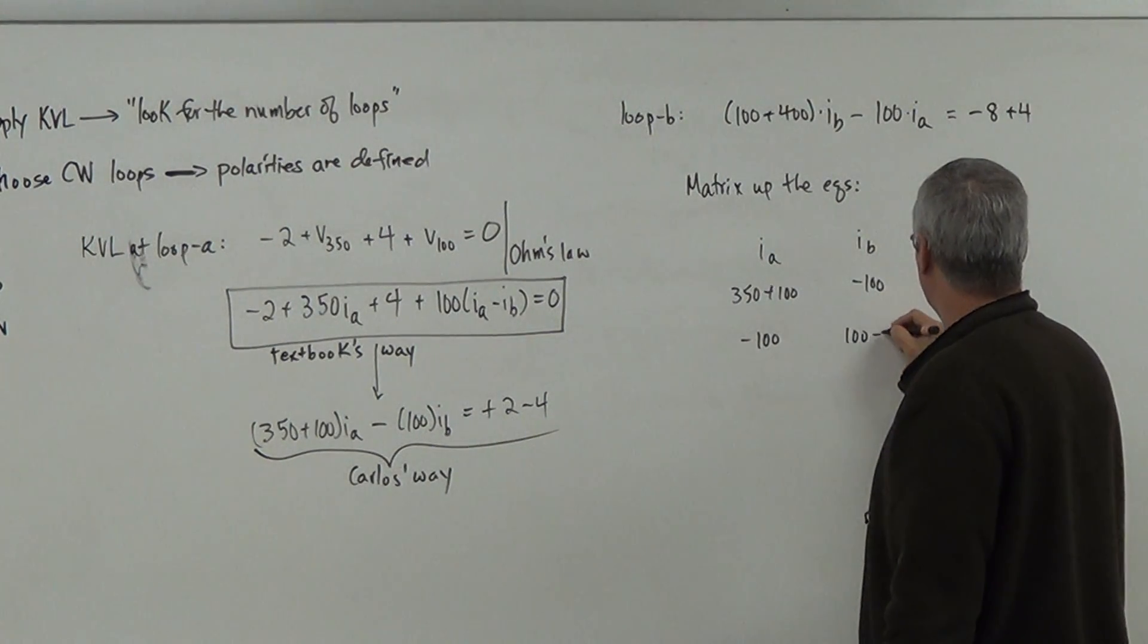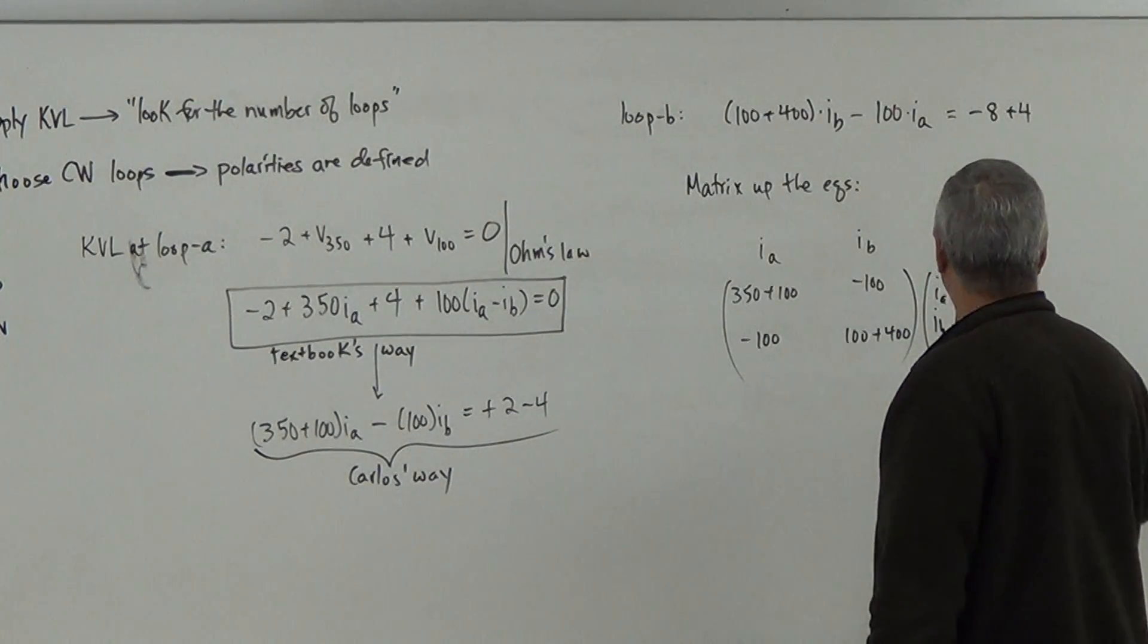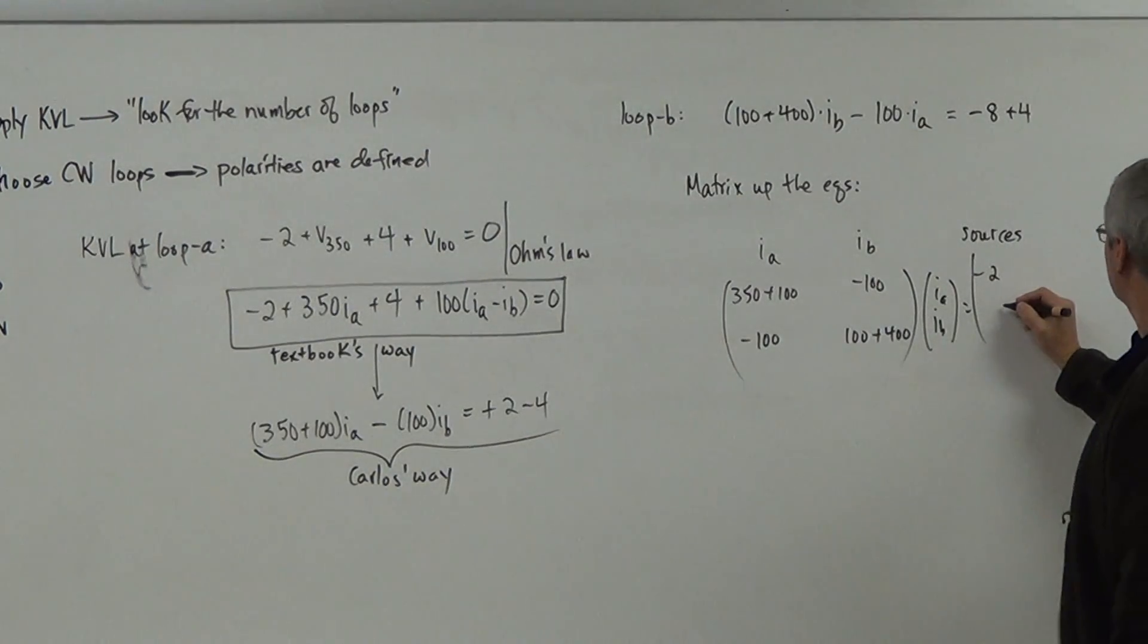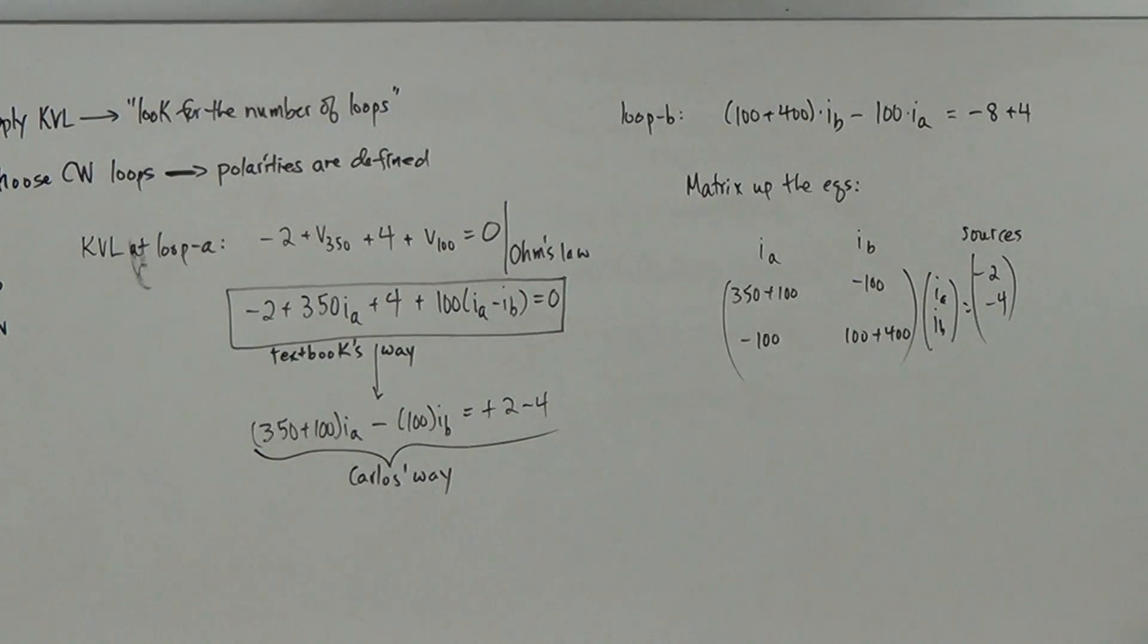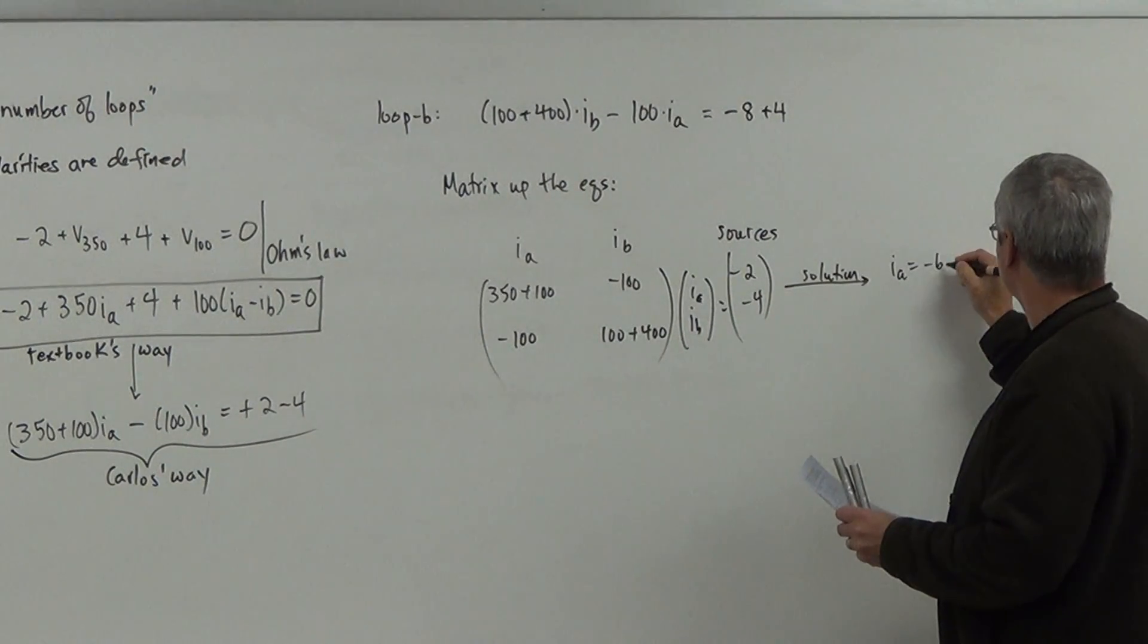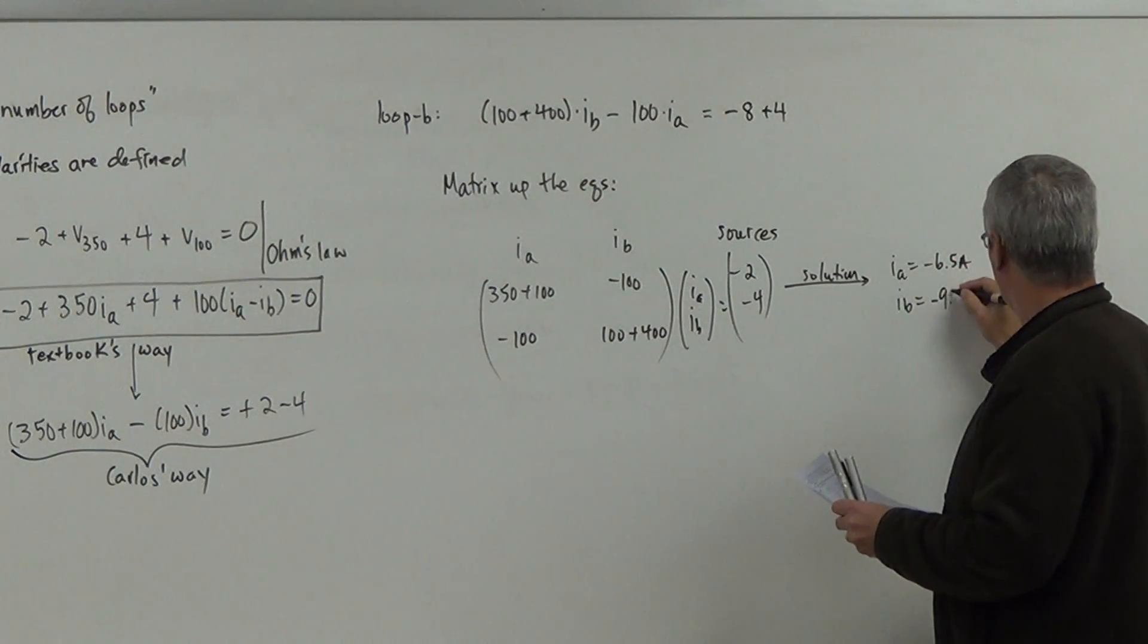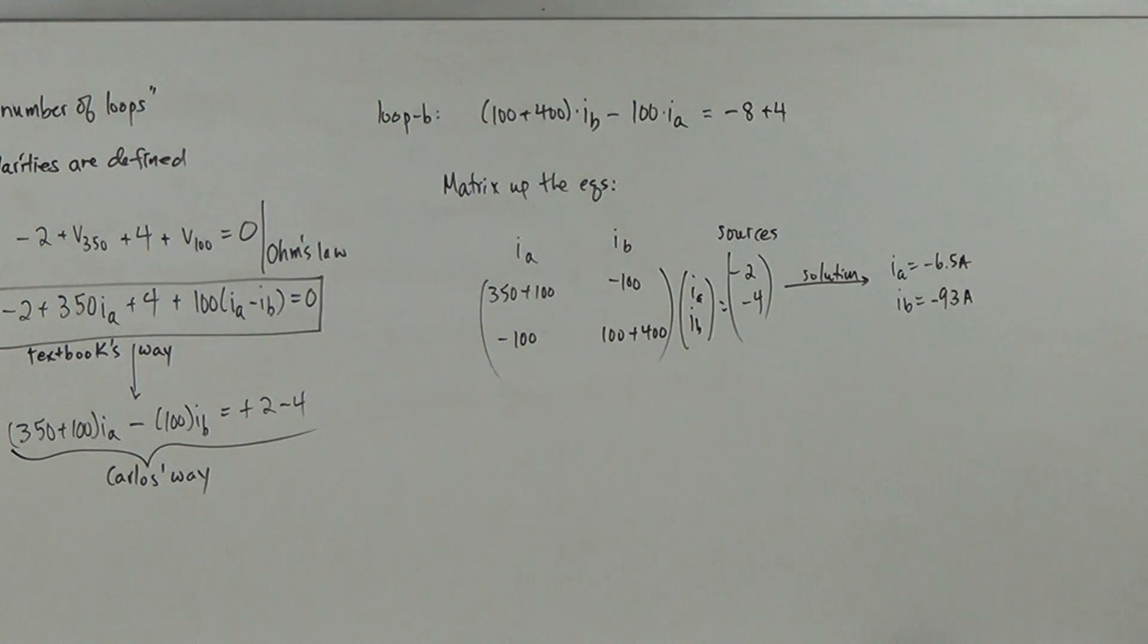Then I get 100 plus 400, I_A, I_B, and then this guy gives me minus 4 plus 4, which gives me minus 8 plus 4 gives me minus 4, and then I just do the standard matrix solution, and I get solutions for these. It looks like I get I_A equals to minus 6.5 amps, I_B I get minus 9.3 amps, okay?